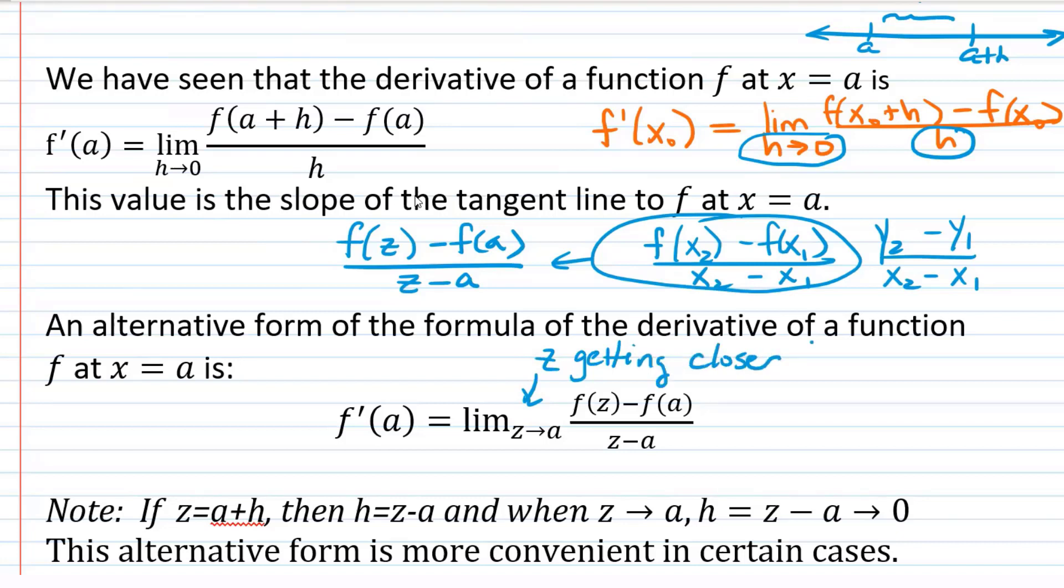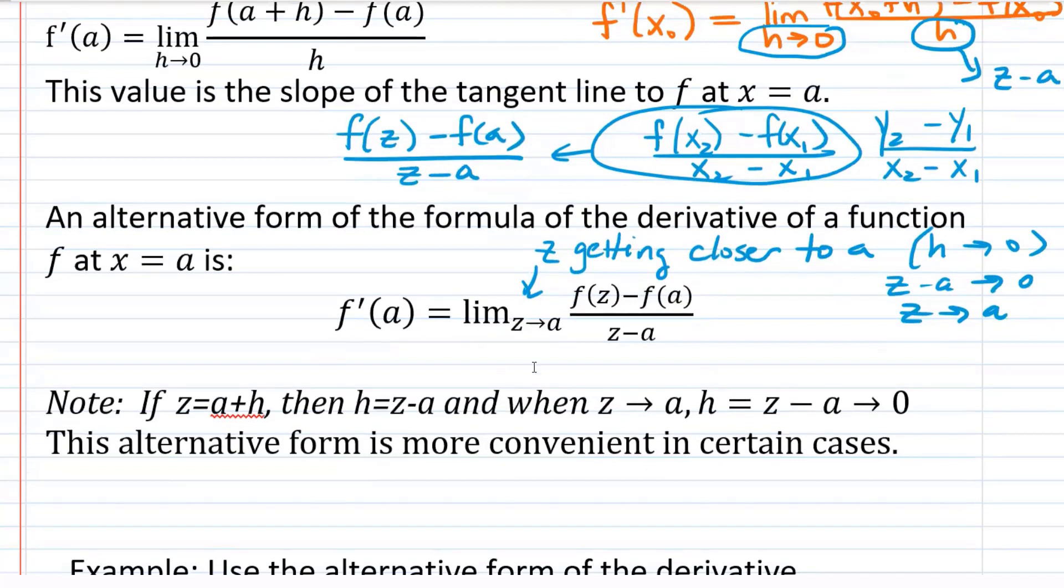So what this limit here means is z is getting closer to a. This is the same thing as saying h is approaching zero. Because remember, h is exactly the difference between z and a. It's how far apart they are. So if h is getting closer to zero, then z minus a is getting closer to zero, which means that z is getting closer to a. So this is a different version of the formula for the derivative that you may see. And in certain cases, it's more convenient to use that form than the other one.